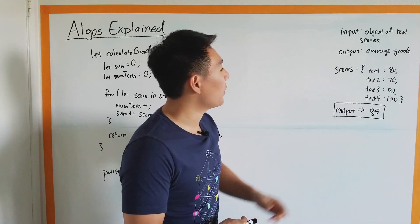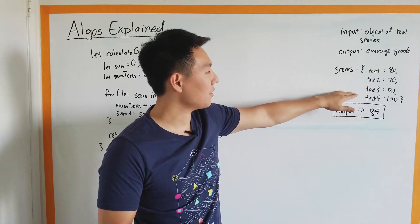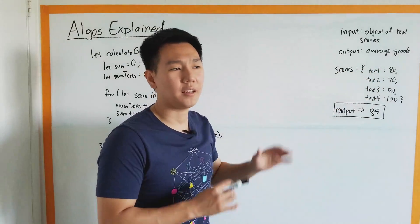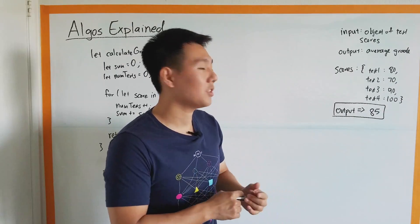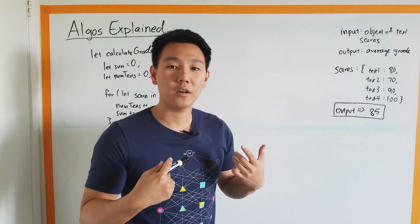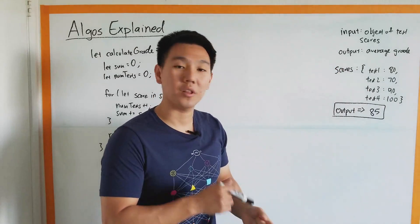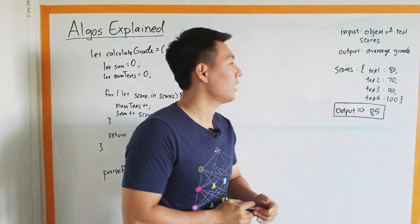By our output being average grade, we already kind of know we don't really care about the test names, we just care about the scores, we care about how many tests there were, and the sum of that. That is pretty much exactly what we're going to be working with: the test scores, the sum of the test scores, and the number of tests there are.